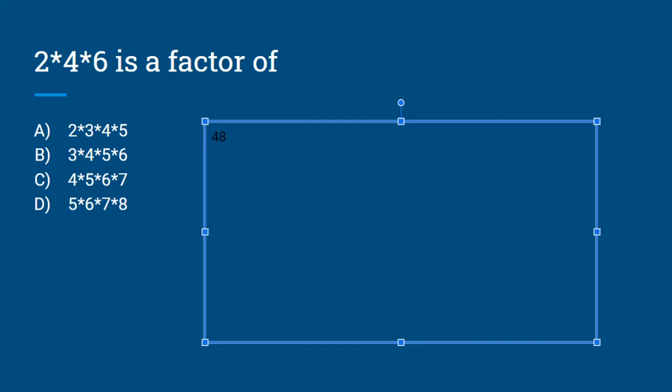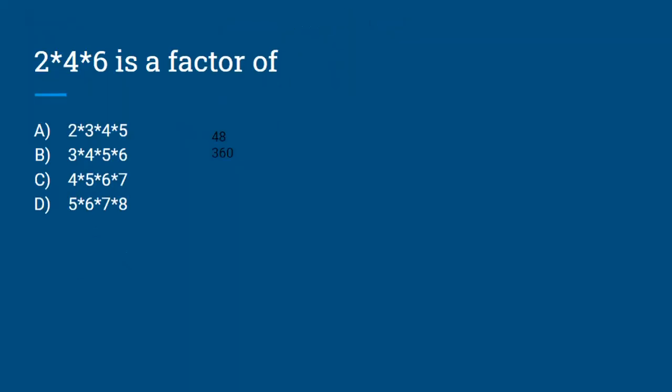3 times 4 times 5 times 6 would get you 360, and 48 cannot go into 360 evenly, so that wouldn't work either. 4 times 5 times 6 times 7 would get you 840, and if we divide that by 48, we will get not an even number.